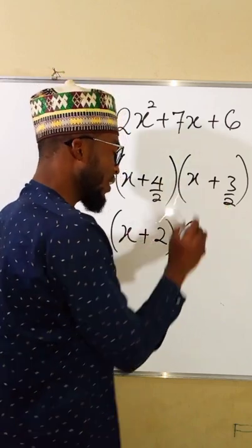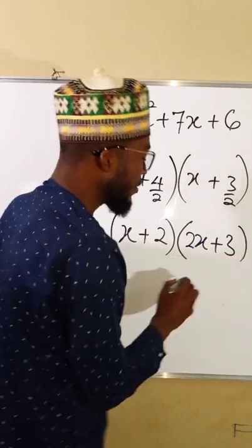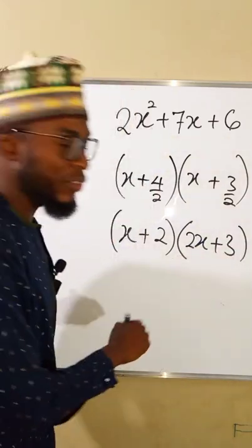So multiply that 2 with this x, so we have 2x plus 3. And this is the factorized form of this quadratic trinomial.